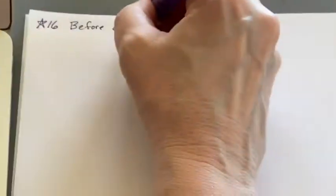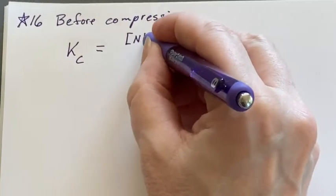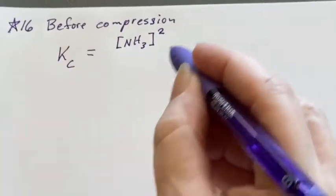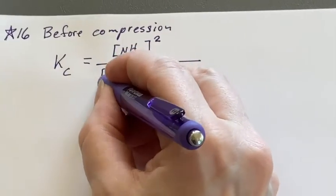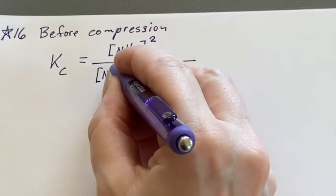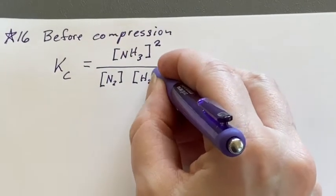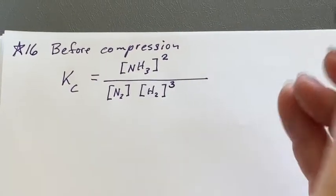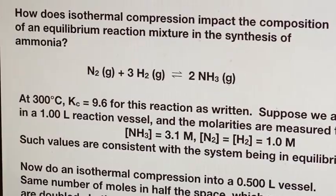Before the compression, Kc should be the concentration of the ammonia, because that's a product, squared because of the 2 in the stoichiometry, and then over the concentration of nitrogen and the concentration of hydrogen. Concentration of hydrogen has to be cubed because it has a 3 in the stoichiometry.